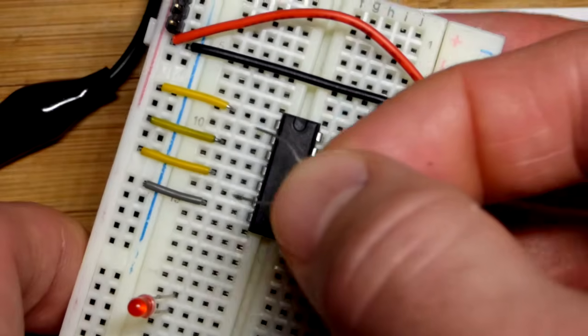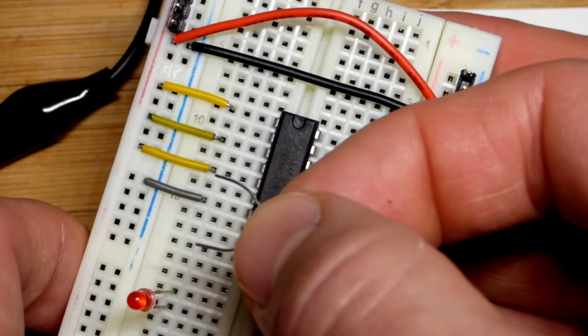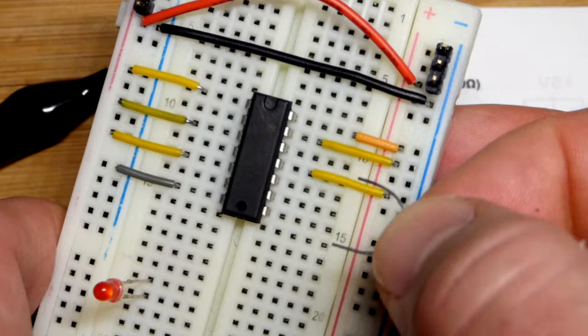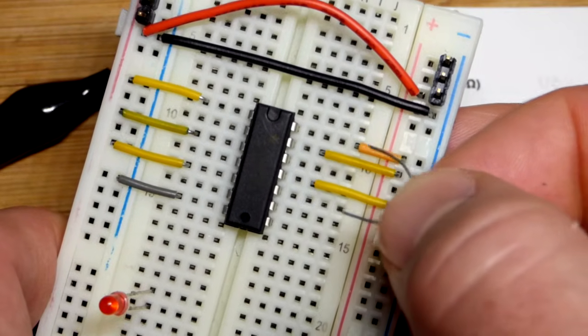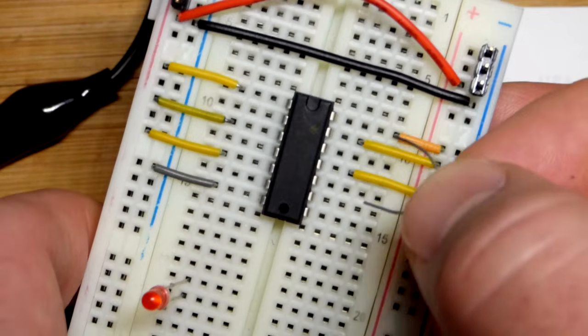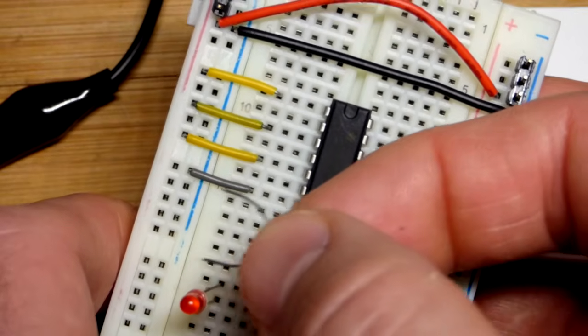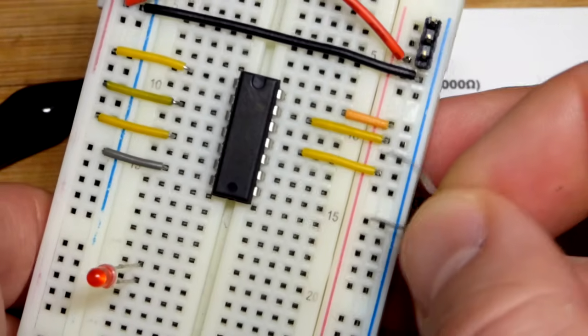Where you see these yellow jumpers, those are inputs for the five other NOT gate Schmitt triggers. And then you have to power it. Positive supply to pin, I believe that's 14, and then pin 7, negative supply.